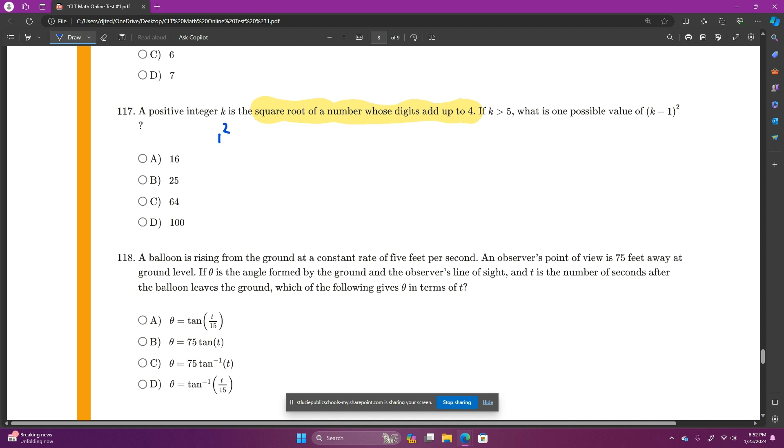So 1 squared is 1, 2 squared is 4, 3 squared is 9, 4 squared is 16, 5 squared is 25, 6 squared is 36, 7 squared is 49, 8 squared is 64, 9 squared is 81.